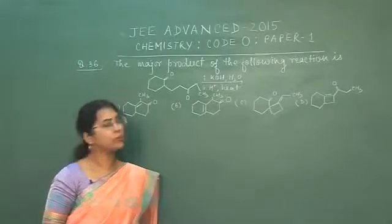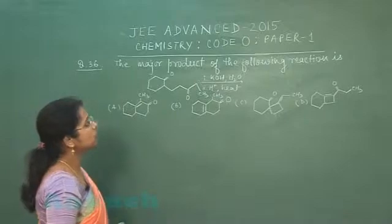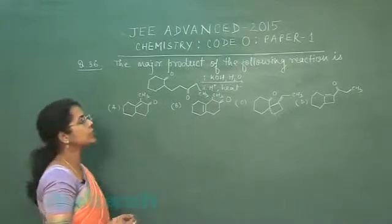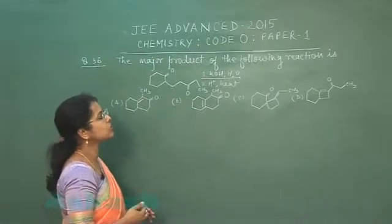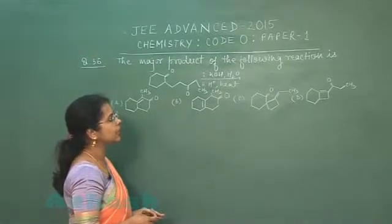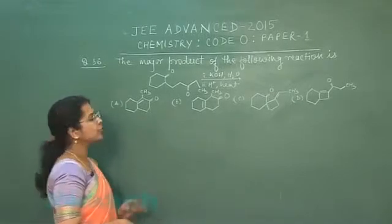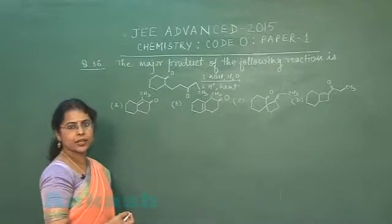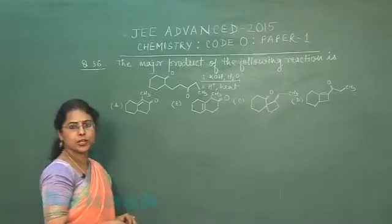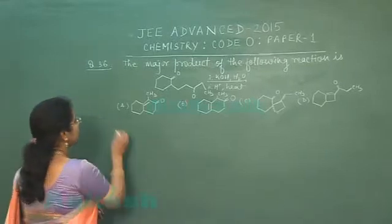Question number 36: the major product of the following reaction is to be found. The structure of the compound is given. The conditions are: first step KOH in H2O — that is dilute KOH — and second step in acidic medium with heating. Four options are given in the form of structures, and we have to determine which structure is correct.